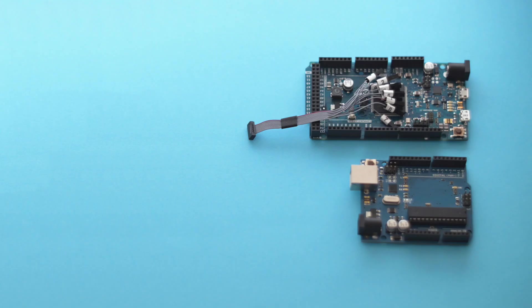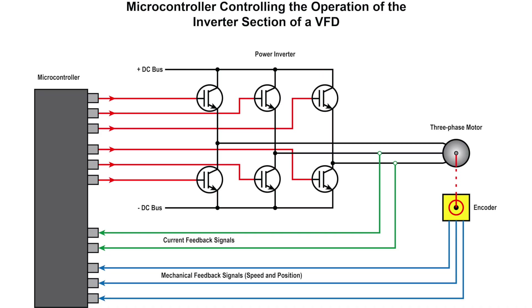A microcontroller is an ultra-large-scale integrated circuit that functions as a complete computer on a chip, containing a processor, memory, and input/output functions. Microcontrollers are most often embedded or physically built into the device they control. An embedded microcontroller is designed to do some specific task, rather than to be a general-purpose computer for multiple tasks. They often run with limited computer hardware resources, small or no keyboard and screen, and little memory. The example shows the way a microcontroller is used to control the operation of the inverter section of a variable speed drive.